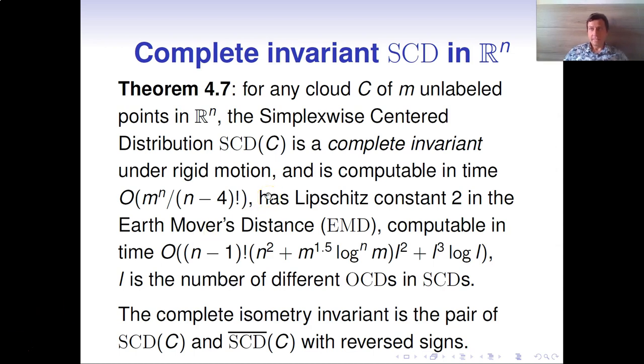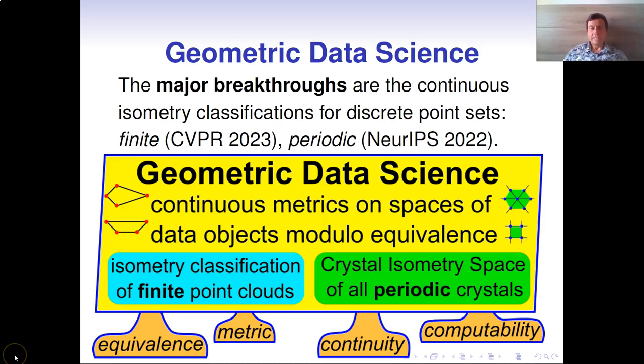This is our main result stating that SCD is a complete invariant. The final slide highlights the major breakthroughs in geometric data science, namely the continuous isometric classifications for finite clouds of points in this paper and the previous work for periodic points. Thank you.